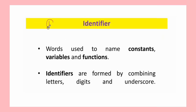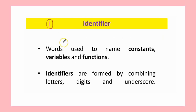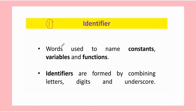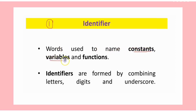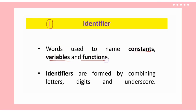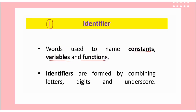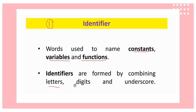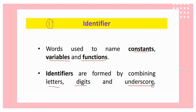First, we see what an identifier is. Identifiers are words used to name constants, variables, and functions. They are formed by combining letters, digits, and underscores.